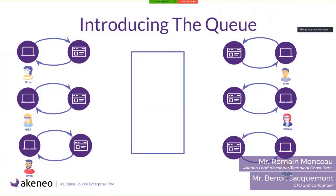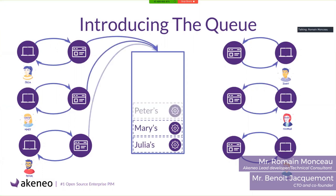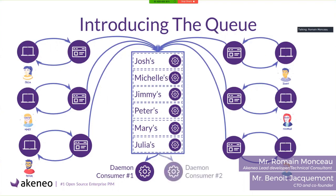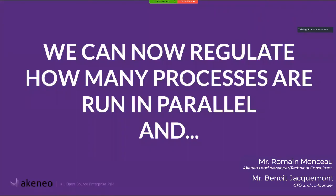That's where we introduce the queue. Instead of running all processes at the same time, they wait in the queue: Julia's, Mary's, Peter's, Michelle's, and Joseph's commands are stacked in the queue. In front of the queue we have daemon consumers — other processes that just take things from the queue and run them. This way we can control the number of processes running on the server, because it equals the number of queue consumers alive on the server. We can now regulate how many processes run in parallel, making it far easier to ensure we won't overwhelm the server.